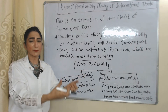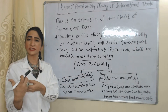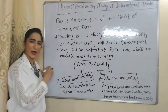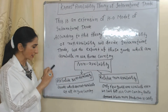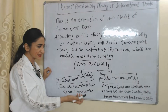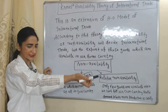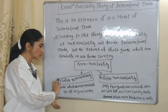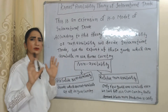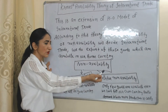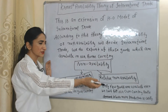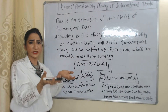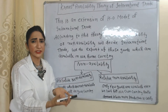We will do imports of those goods which are non-available. According to this theory, non-availability is divided into two parts: absolute non-availability and relative non-availability. Absolute non-availability means goods which are not available at all in our country. Relative non-availability means only few goods are available, such that we cannot even fulfill our own country's demand, and more production would be very costly.